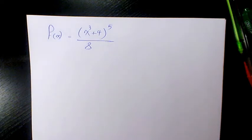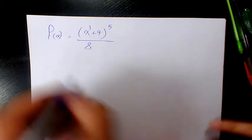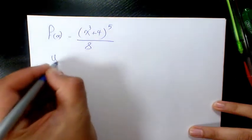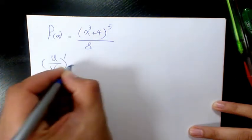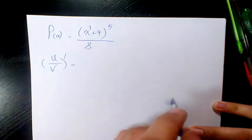What's up guys, this is Massey, welcome to another video. In this video I want to show you how to find the derivative of two different functions. The first function is (x³ + 4)⁵ divided by 8, and we know when we use the quotient rule — u divided by v — it's going to be